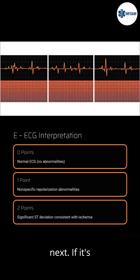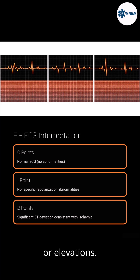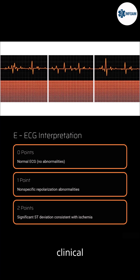ECG is next. If it's completely normal, score 0. Nonspecific repolarization abnormalities get a 1. ST depressions or elevations? That's a 2. Always interpret in clinical context.